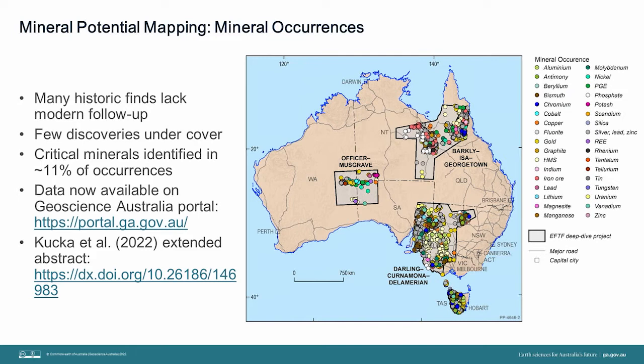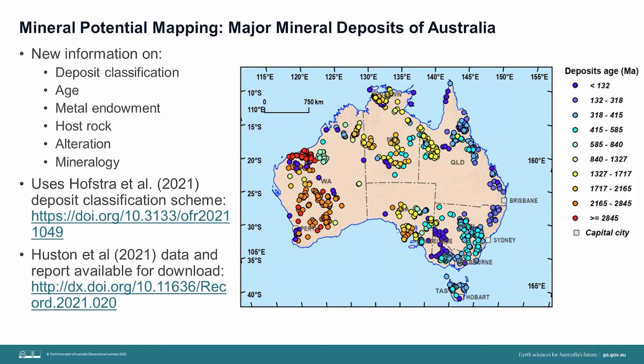All three regions are rich in Cobalt. Barclayser-Georgetown and Darling-Kernemona-Delomerian are rich in Tungsten. The Murray Basin within the Darling-Kernemona-Delomerian deep-dive area is rich in heavy mineral sands, and the Barclayser-Georgetown region is rich in Antimony. In addition to understanding the distribution of smaller mineral occurrences, it is also important to compile information on the larger, more economic mineral deposits.